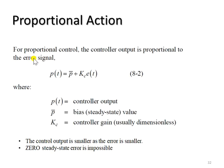In the first slide, we are going to look at proportional action. For proportional control, the controller output with respect to the error signal can be given by this equation p(t) = p̄ + Kc·e(t), where p(t) is